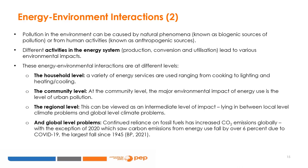Environmental pollution can be caused by natural phenomena, known as biogenic sources, or from human activities, known as anthropogenic sources. Different activities in the energy system — production, conversion, and utilization — lead to various environmental impacts. These energy-environmental interactions operate at different levels. At the household level, a variety of energy services are used ranging from cooking to lighting and heating and cooling. At one end, biomass-based fuel is used, while at the other end, modern energies such as natural gas and electricity are used to satisfy energy needs.